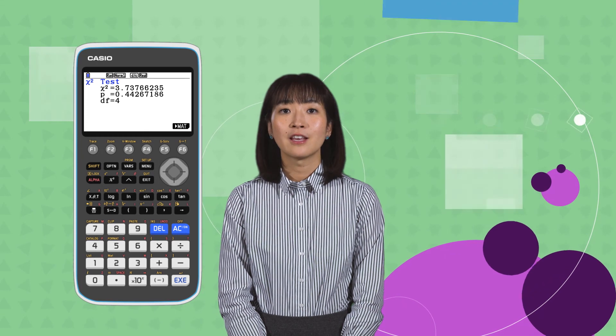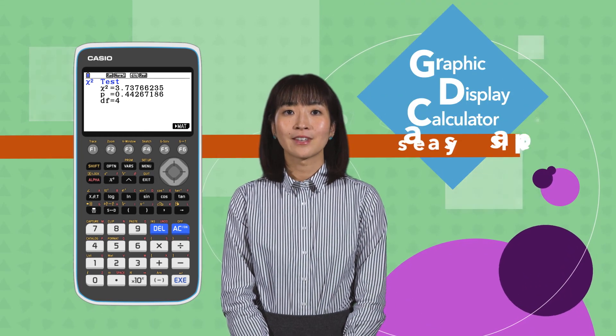In this video, we have shown how to calculate chi-squared values using a graphic display calculator, as easy as pi.